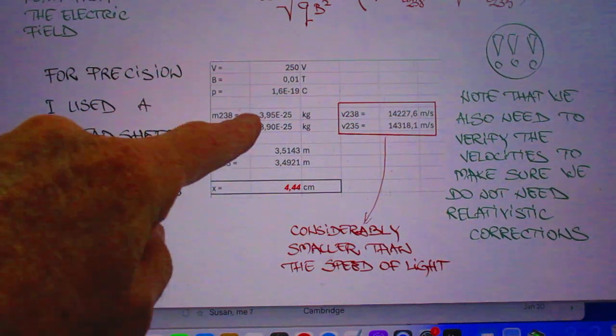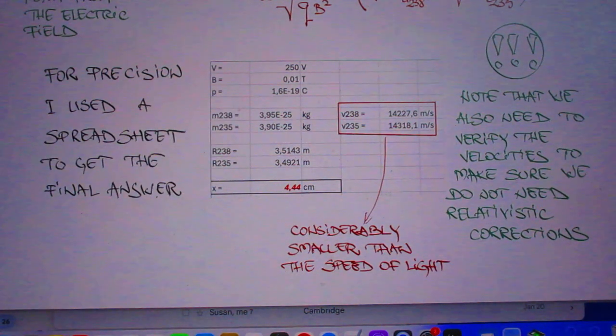Yeah, I call this huge mass. So he mentions note that we also need to verify the velocities to make sure that no relativistic correction is needed. And indeed, that is not needed. I probably mentioned that also in lecture 13.